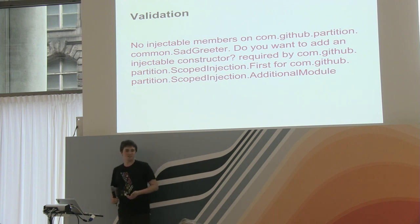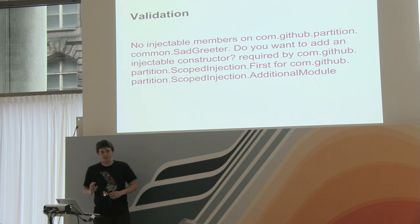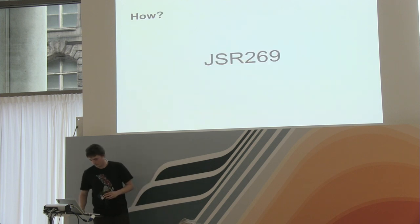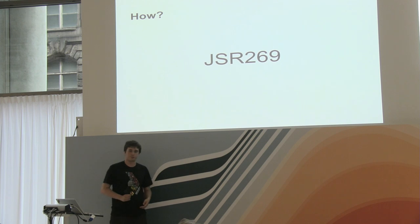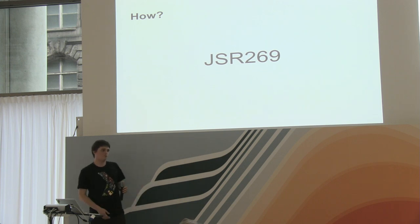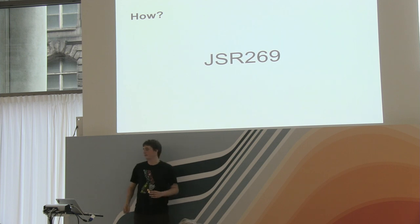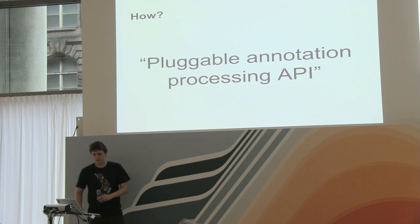One thing that is often misunderstood: Dagger without the annotation processor can still work. If your build system doesn't include the annotation processors in the compile classpath, Dagger will not generate proper adapters but will silently fall back to reflection mode at runtime, logging only verbose messages. Please make sure you are really using code generation and that the proper annotation processors are in the classpath. The standard defining annotation processors is JSR 269, and you can write your own — it's not a big deal.